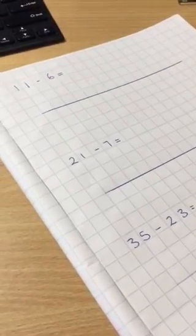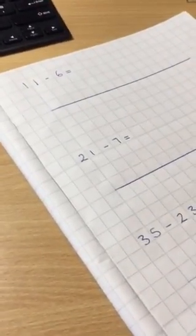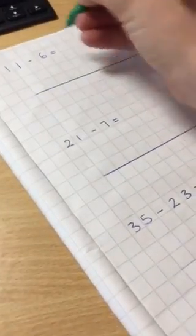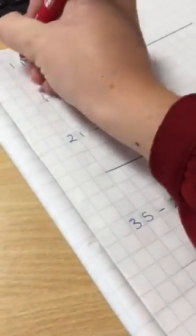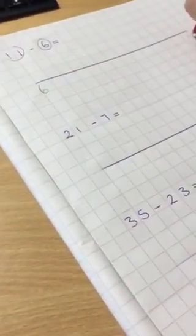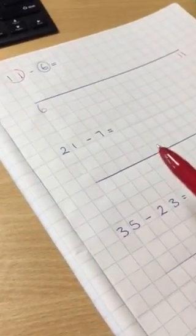Okay, so with subtraction what we've been asking the children to do is put the smallest number at the start of a number line and the biggest number at the end and then jump up to find the difference.